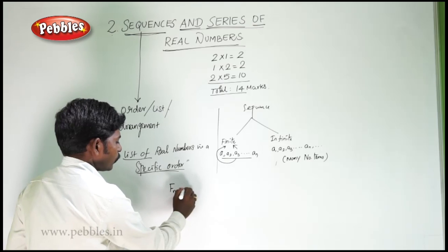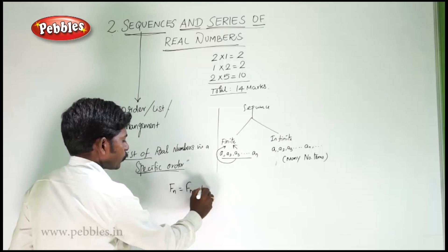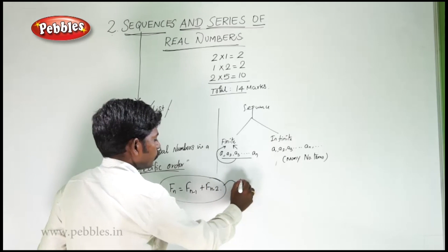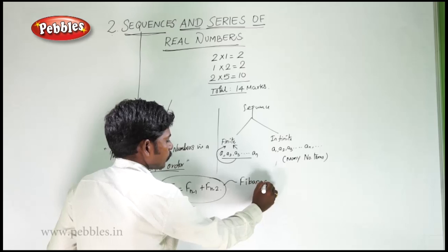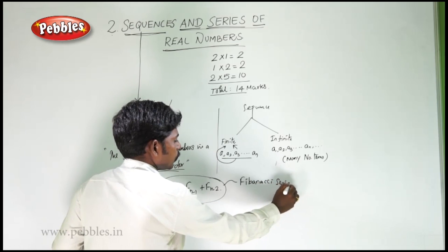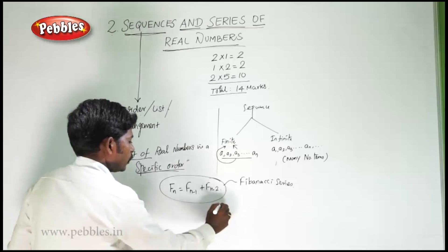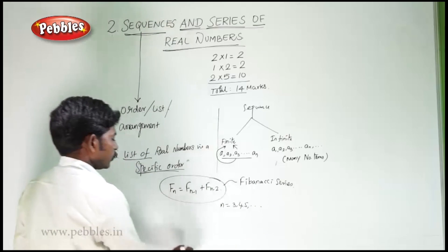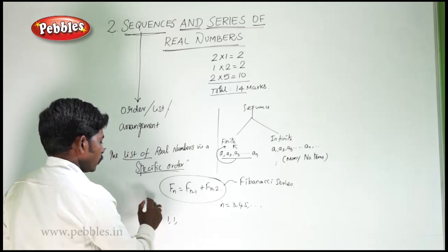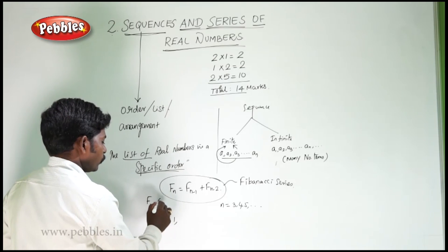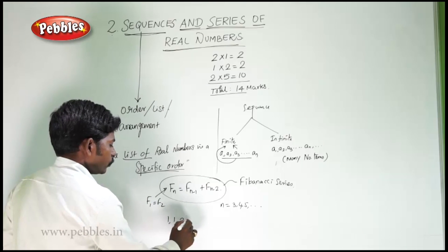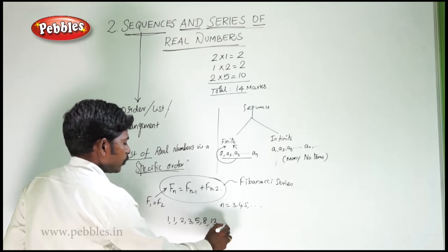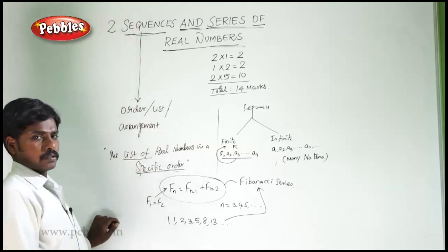If f(n) is equal to f(n-1) plus f(n-2), this is called the Fibonacci series, where n is equal to 3, 4, 5, and so on. The series is 1, 1, 2, 3, 5, and so on.